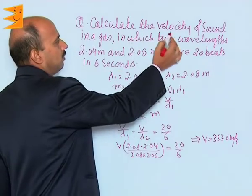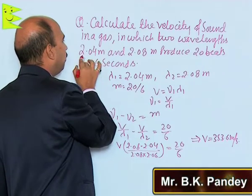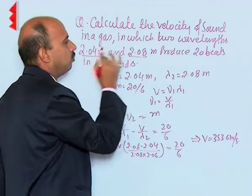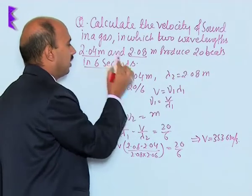Now, see how to calculate the velocity of sound in a gas in which two wavelengths, 2.04 meters and 2.08 meters, produce 20 beats in 6 seconds.